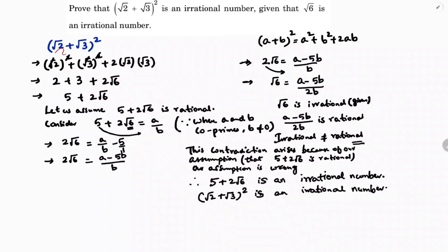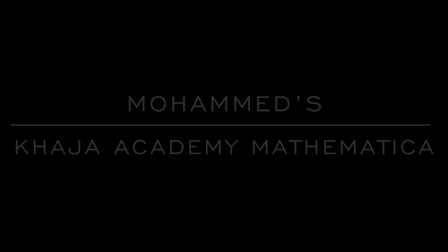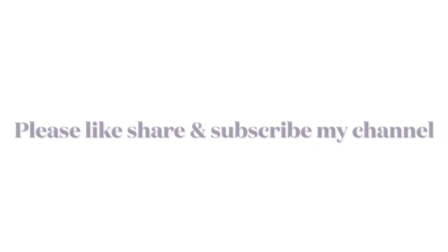To summarize the method: first expand (√2 + √3)² using the (a + b)² formula to get 5 + 2√6. Then isolate the irrational part — make √6 the subject to get √6 = (a − 5b)/(2b). Since √6 is irrational (given) but (a − 5b)/(2b) is rational (since a and b are co-primes), irrational cannot equal rational, and we conclude by contradiction.